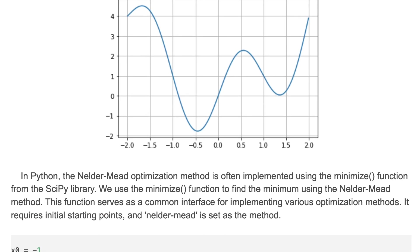In Python, Nelder-Mead optimization method is often implemented using the minimize function from the SciPy library. We use the minimize function to find the minimum using the Nelder-Mead method.